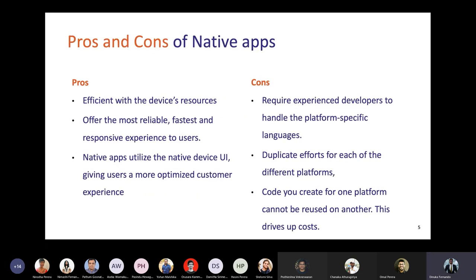The main pros of native application development are: it is very efficient with device resources, meaning you can easily access hardware APIs like camera, GPS, etc. It offers the most reliable and fastest responsive experience to the user. For example, if you're using an Android device, you're familiar with the Android UI, so you get a more flexible user experience.